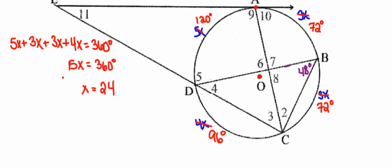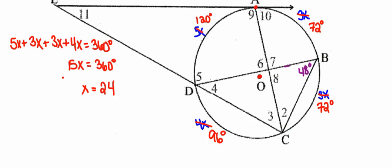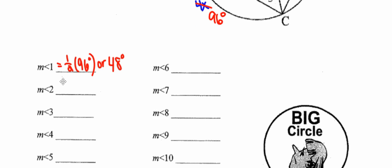For angle 2, extending its sides, I find that the arc it intercepts measures 72 degrees. The vertex of angle 2 is on the circle, making it an inscribed angle. Its measure is therefore half of 72 degrees, which is 36 degrees. I'll clean up the drawing and label 36 degrees in the picture.